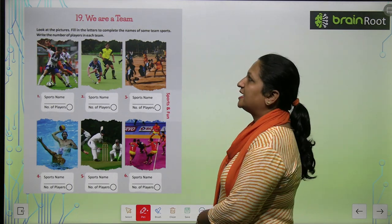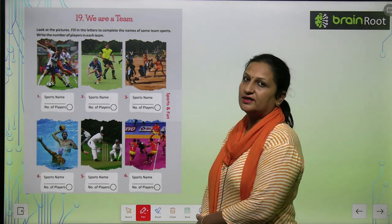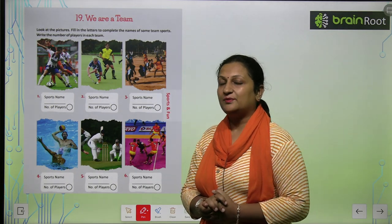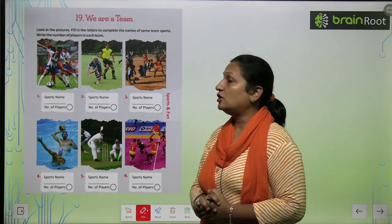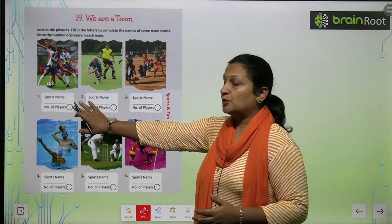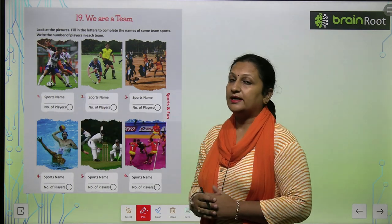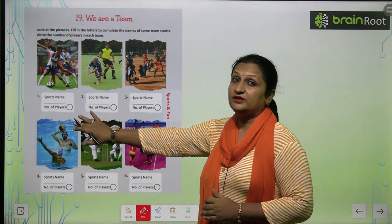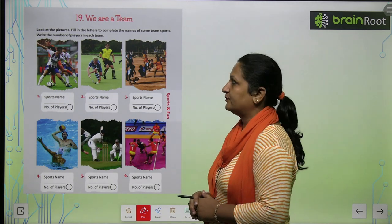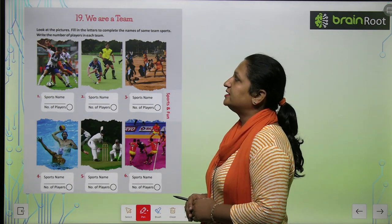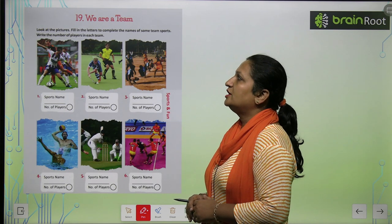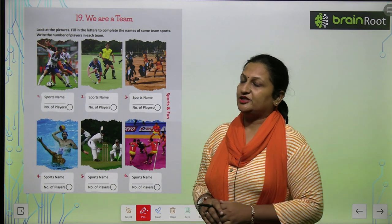Children, let's begin with chapter number 19. We are a team. So in this, you are provided with some team sports and how many players are in each. You have to write the name of the sport and how many players play in it. Look at this picture. Fill in the letters to complete the name of some team sports. Write the number of players in each team.